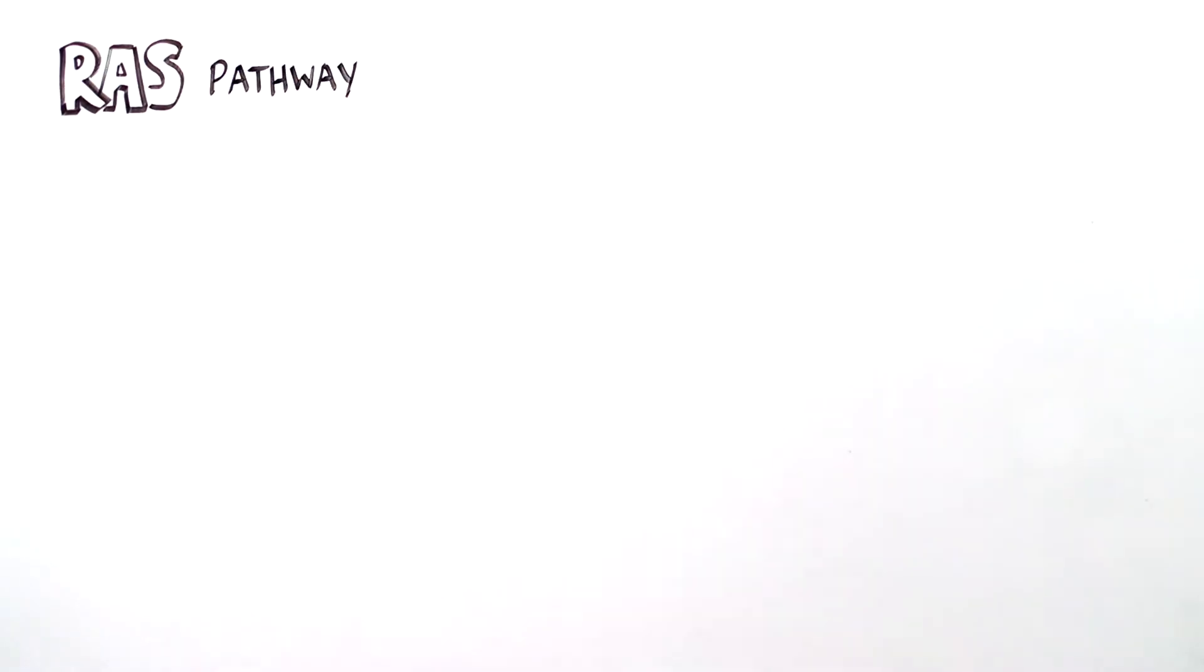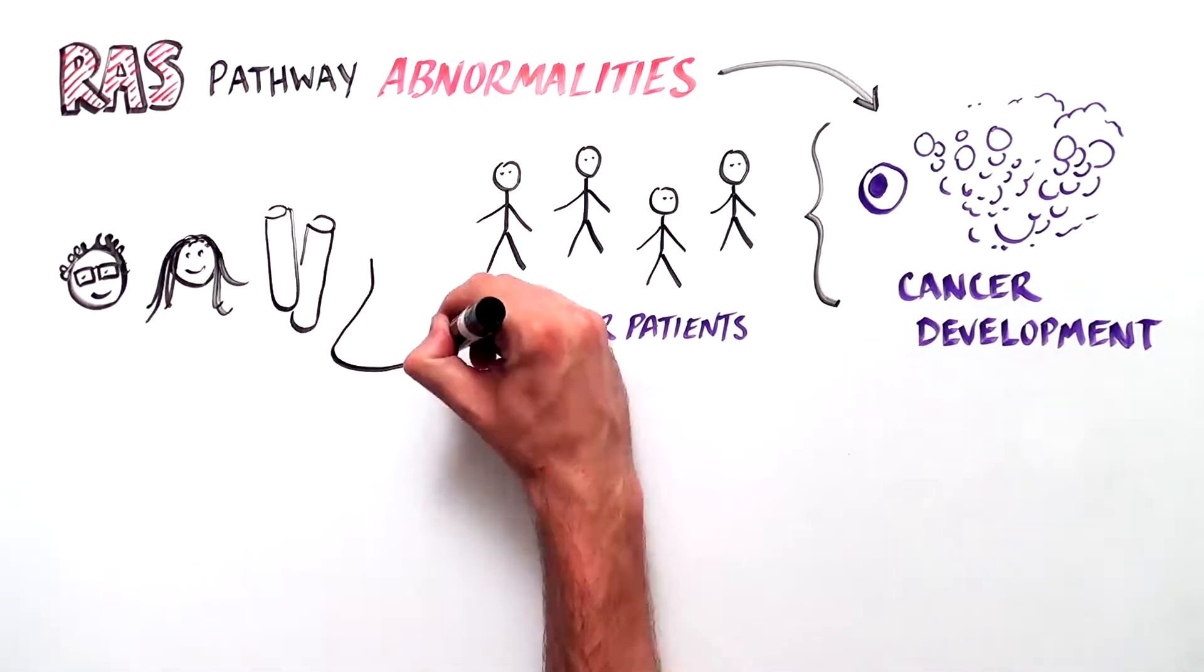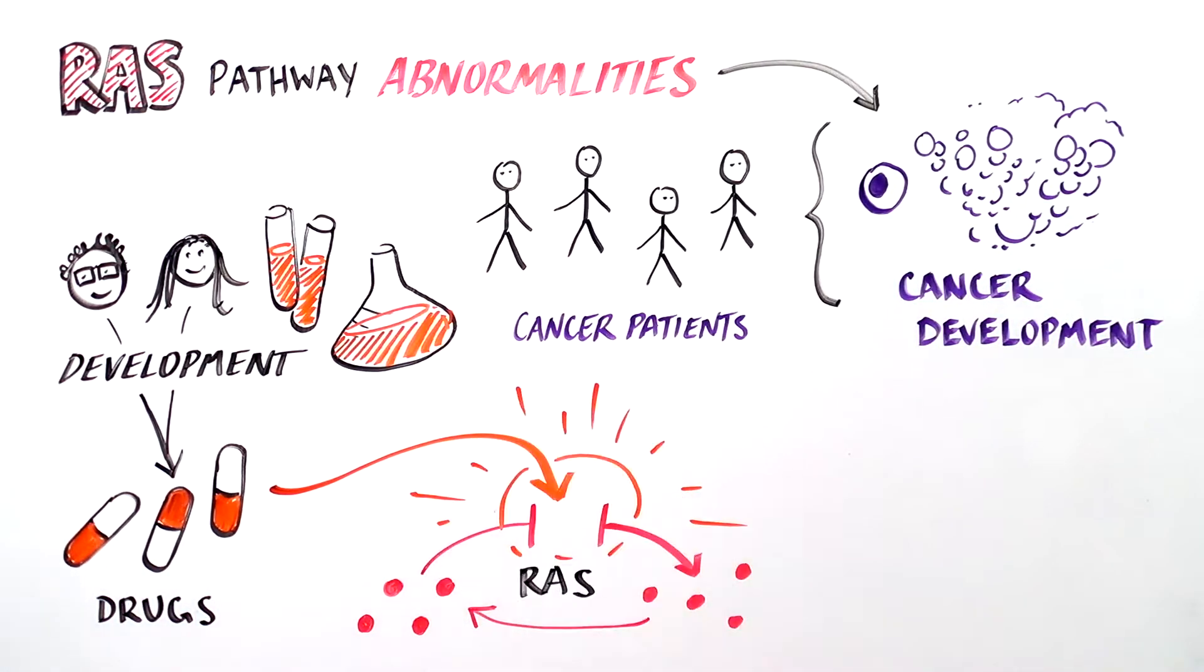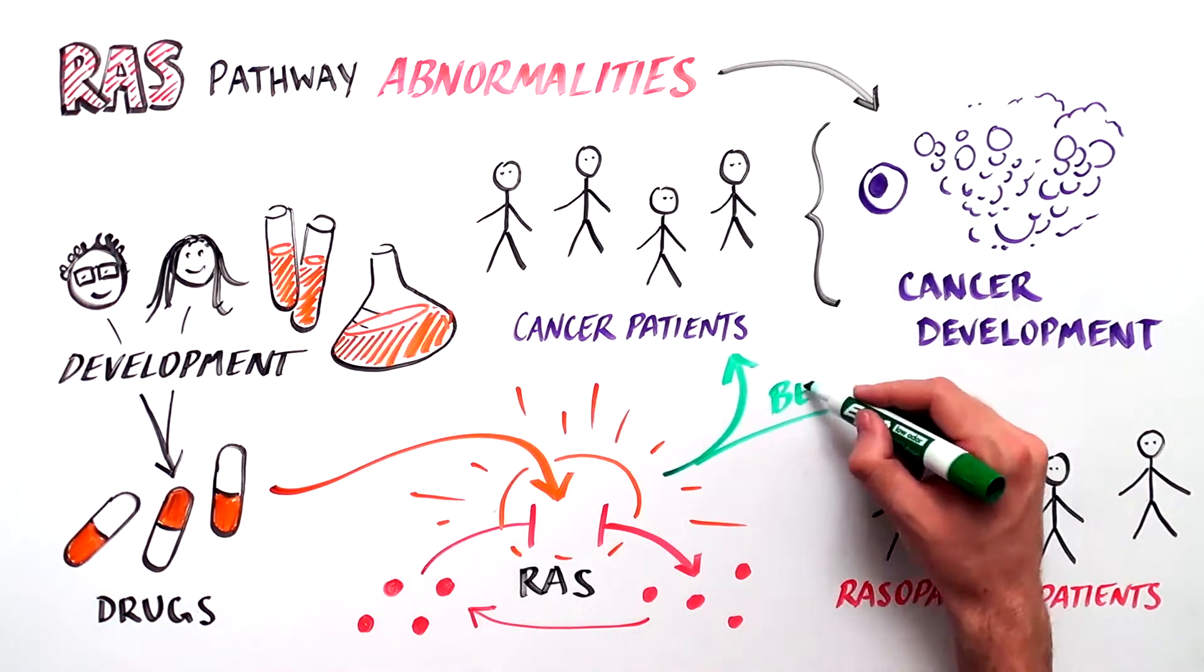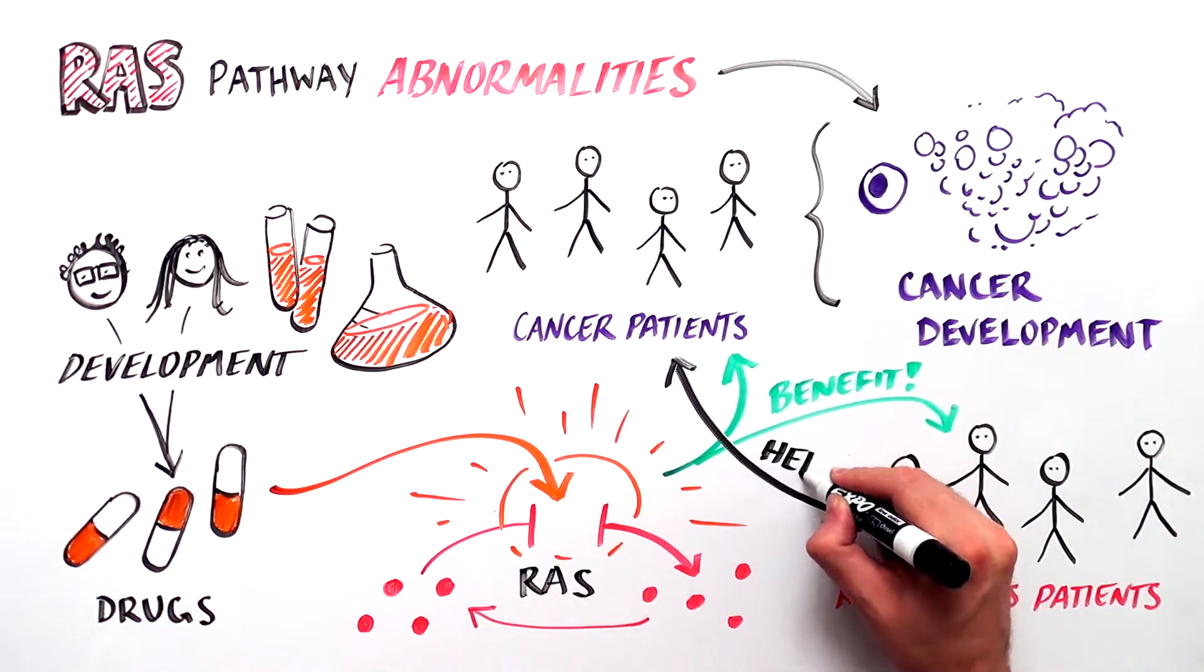Because abnormalities of the RAS signaling pathway are also important for how some cancers develop in the general population, researchers are trying to develop drugs that may repair the miscommunication in the cells that do not work correctly. This may help individuals with a RASopathy in the future as well. It could also be that RASopathy's research could help people with cancer.